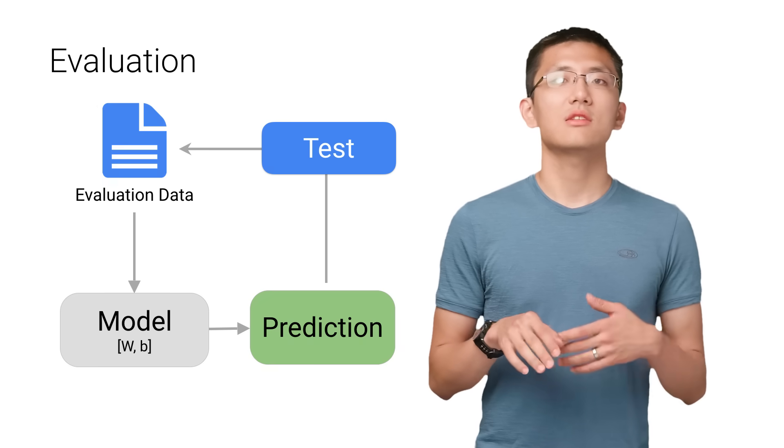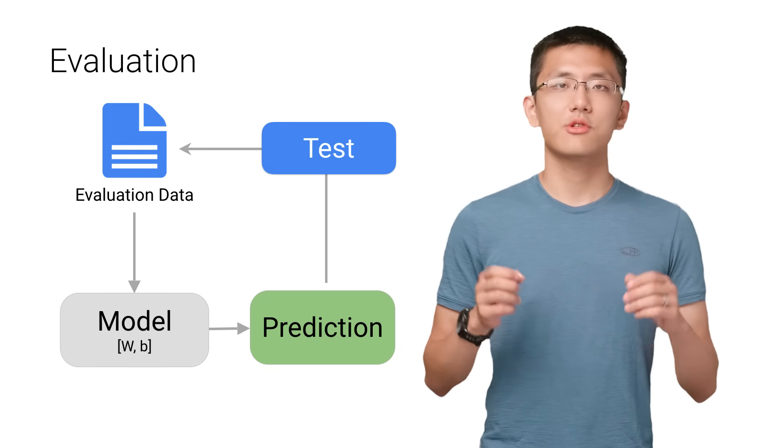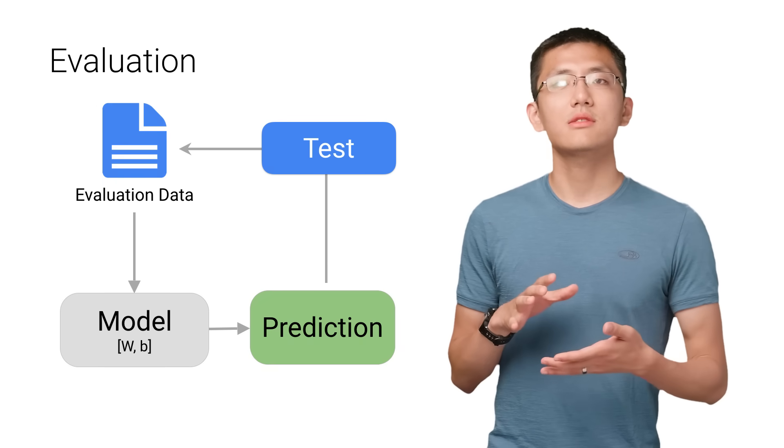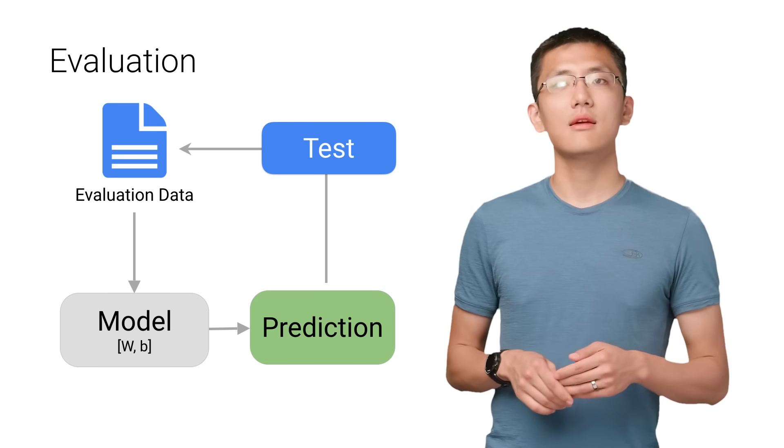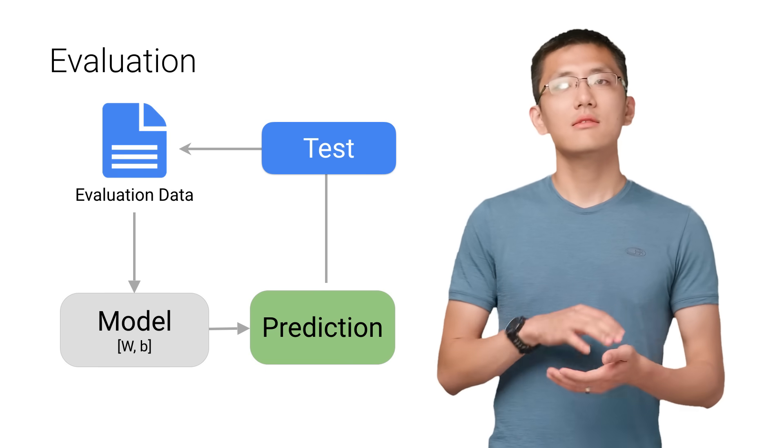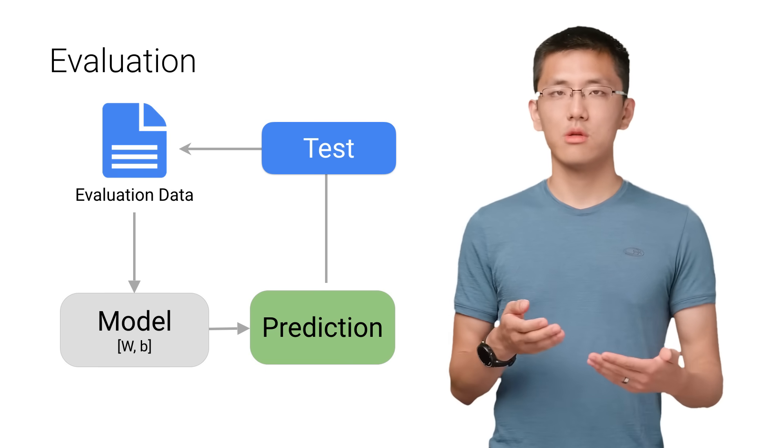Evaluation allows us to test our model against data that has never been used for training. This metric allows us to see how the model might perform against data it hasn't yet seen. This is meant to be representative of how the model might perform in the real world.